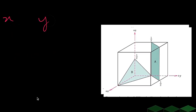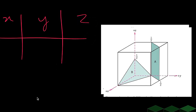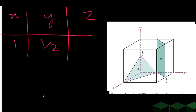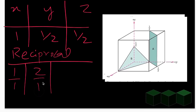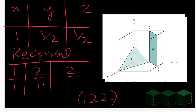Let's make the table: x-intercept = 1, y-intercept = 1/2, z-intercept = 1/2. Taking reciprocals: 1/1 = 1, 1/(1/2) = 2, 1/(1/2) = 2. There are no fractions, so the final Miller indices are (1 2 2). In this way we have easily calculated the Miller indices for both Plane A and Plane B through suitable origin selection.